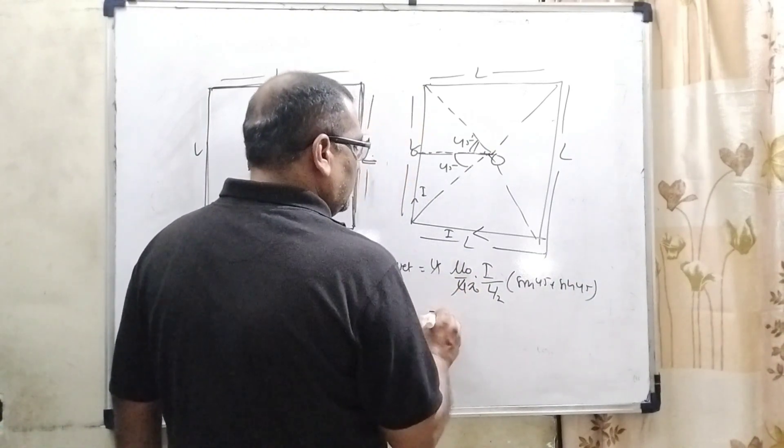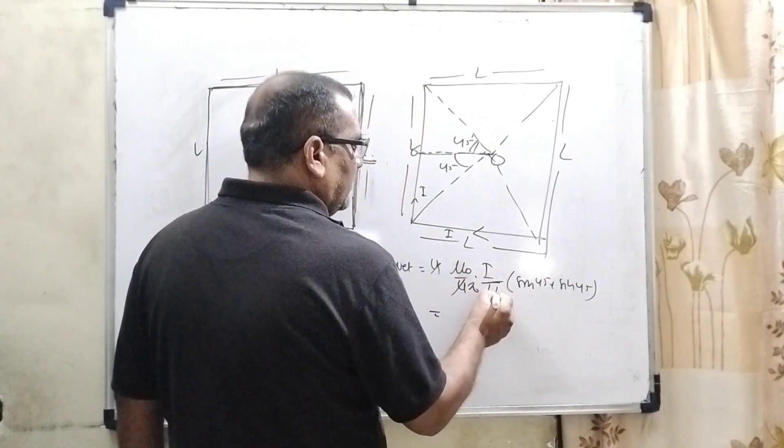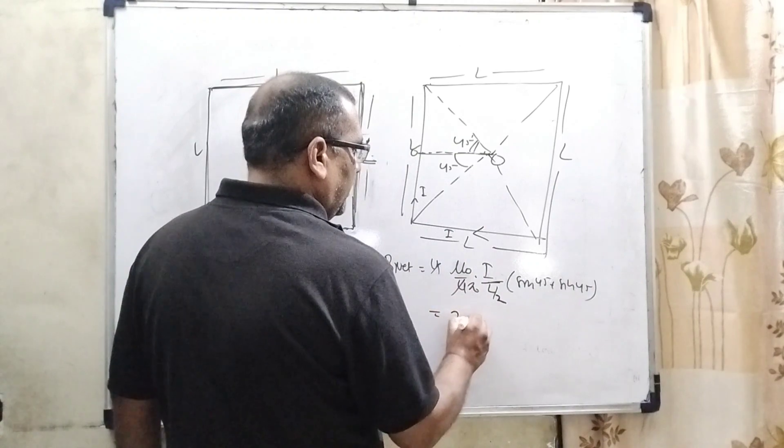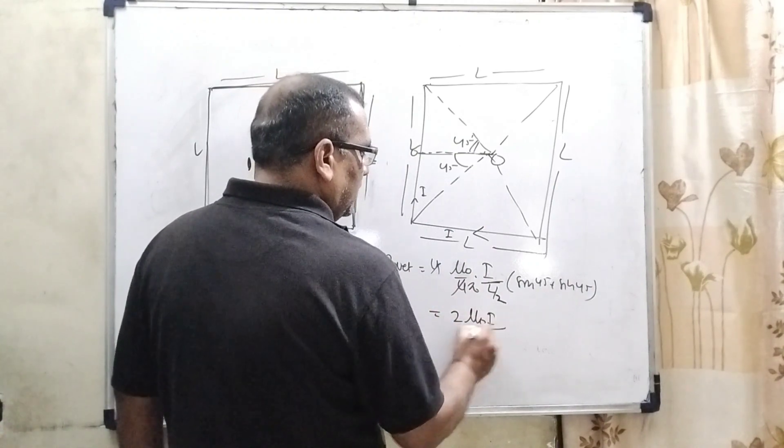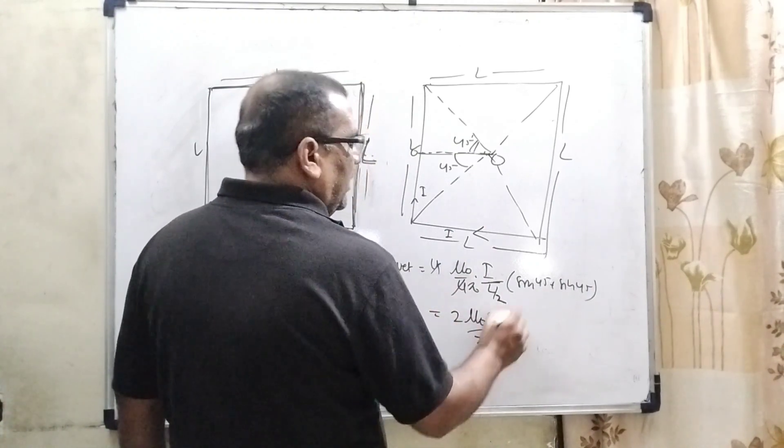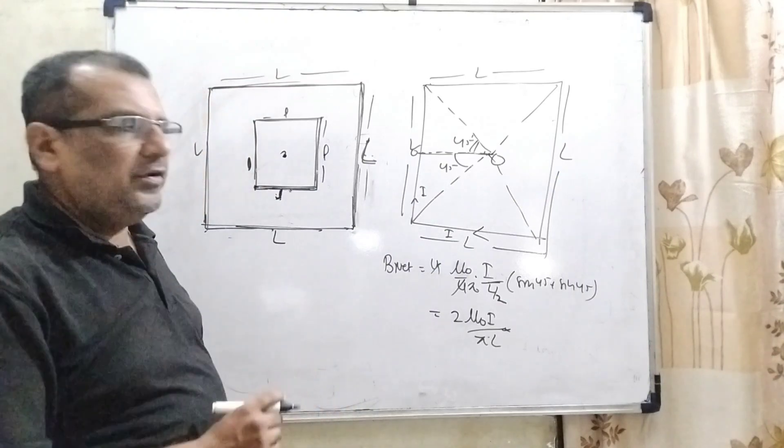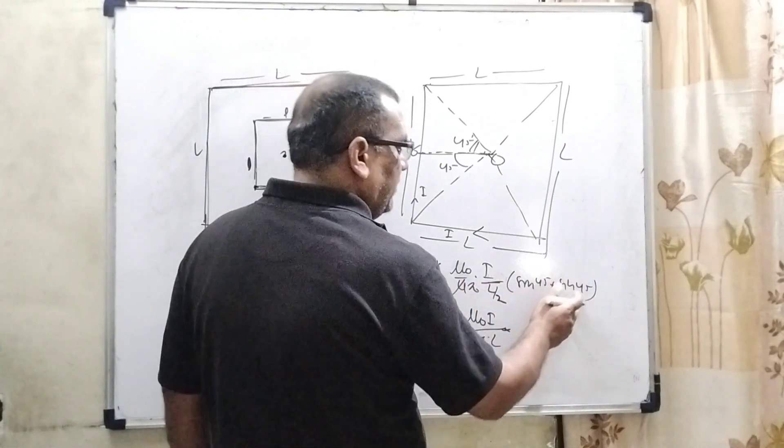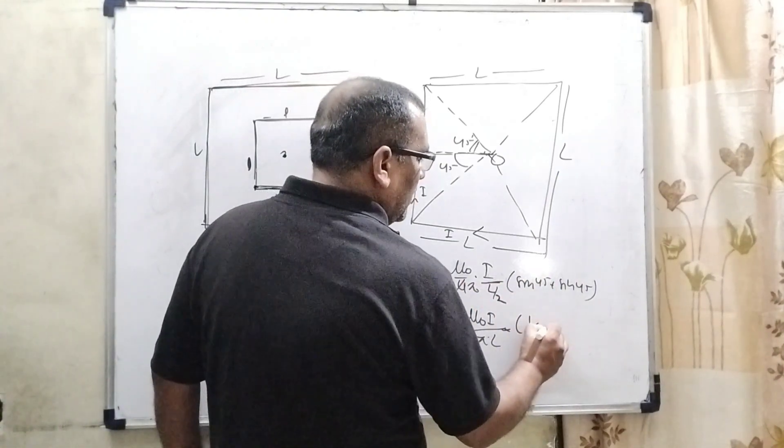4, 4 cancel out. This 2 goes in numerator, 2 mu0 I upon pi into L. And sin 45 plus sin 45, that is 1 by root 2 plus 1 by root 2.